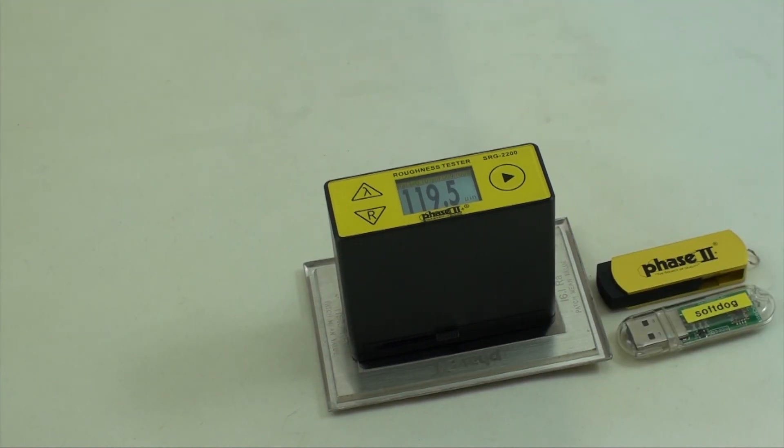For data output, plug the supplied flash drive into the USB port on your PC. Then plug in the supplied USB dongle into another USB port to allow access to the software program. Double-click the software folder to begin downloading and installing the software.